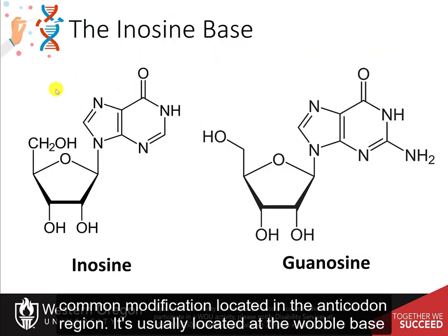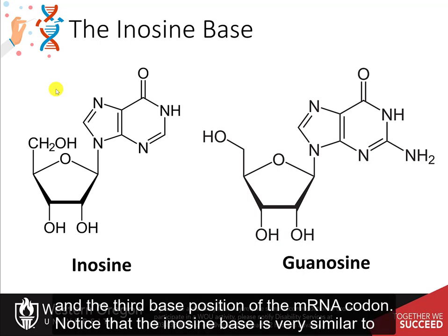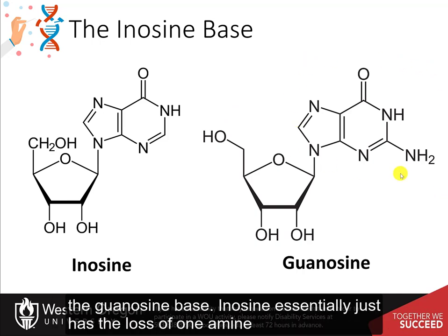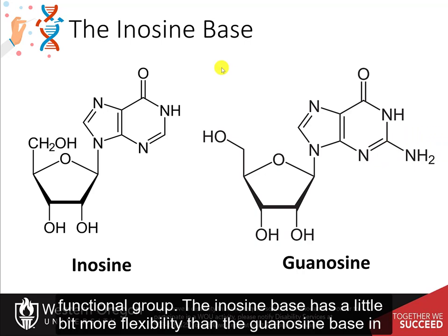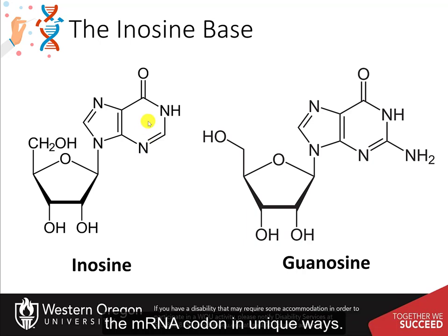The inosine base is the most common modification located in the anticodon region. It is usually located at the wobble base position, which is the first position of the anticodon and the third base position of the messenger RNA codon. The inosine base is very similar to the guanosine base — inosine essentially just has the loss of one amine functional group. The inosine base has a little more flexibility than the guanosine base in its movement at the wobble position, leading to hydrogen bonding with the third position of the messenger RNA codon in unique ways.